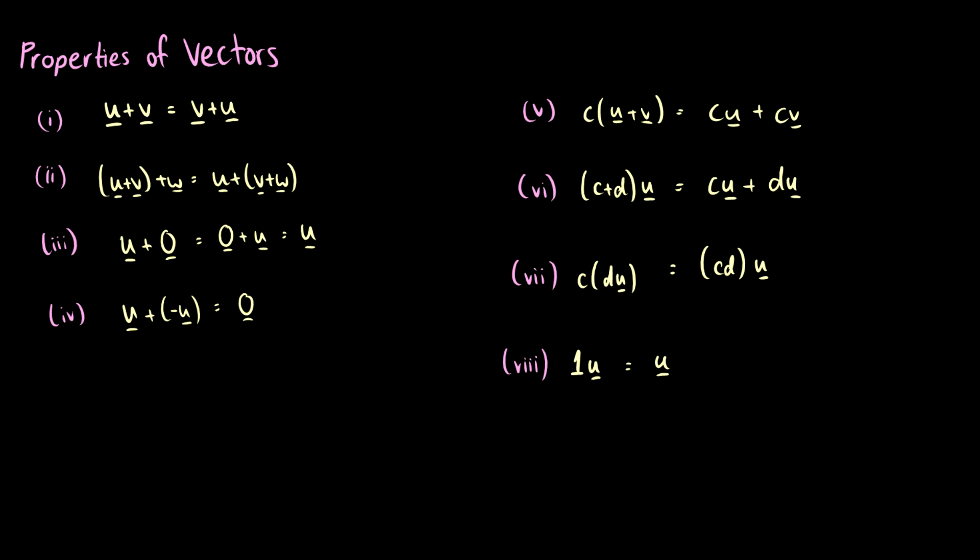Here's the first one: if we have a vector u plus v, we can switch the order that we add them. This is how we get the parallelogram design when drawing vectors in a plane. The second property says if we have vectors u plus v plus w, we can take u plus v first and then add w, or we can take v plus w first and then add u.